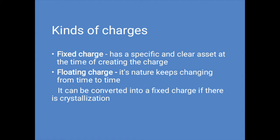Now let us see the kinds of charges. Charges are mainly divided into fixed charge and floating charge. A fixed charge is identified with a specific and clear asset at the time of the creation of the charge. The company is not supposed to transfer this kind of charge unless the charge holder is paid off his dues. A floating charge relates to the circulating nature of the properties of a company, like sundry debtors or stock in trade. The nature of these kinds of charges keeps changing from time to time. The floating charge can convert into a fixed charge if there is a crystallization, or if the company ceases to be a going concern.